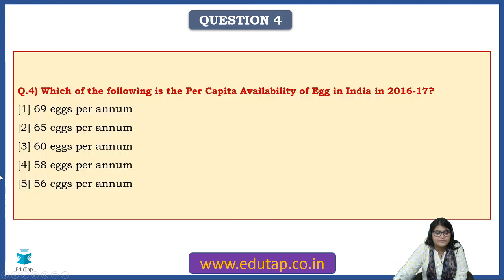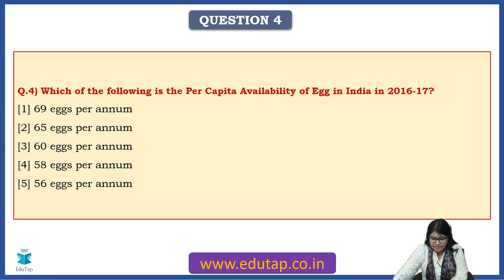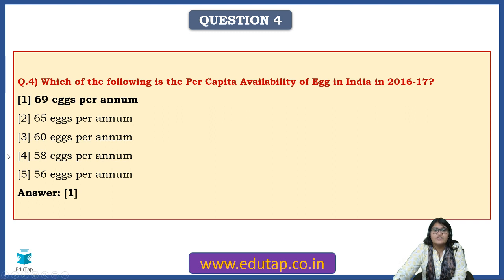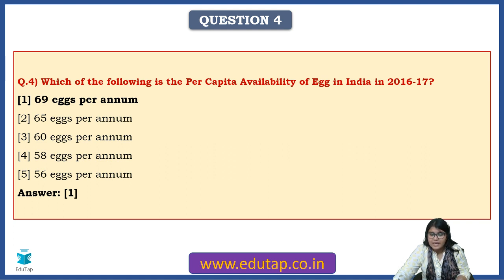Fourth question: what is the per capita availability of eggs in India in 2016-17? As per the 19th livestock census, this is the latest data available. The answer is 69 eggs per annum. Nothing much to understand conceptually — you just need to memorize these figures. But spending these five minutes can make a lot of difference in your final result.